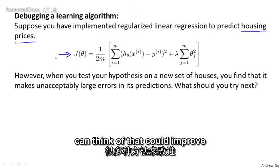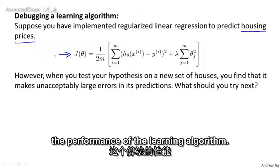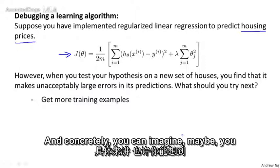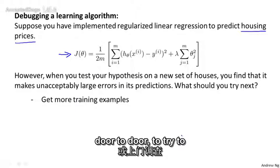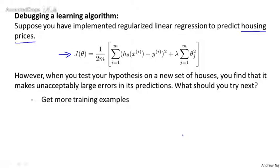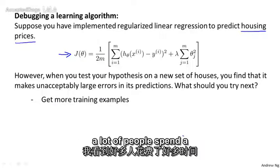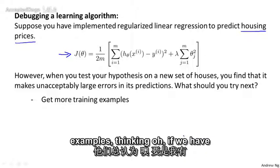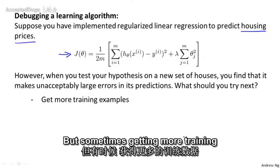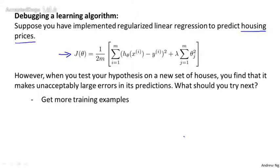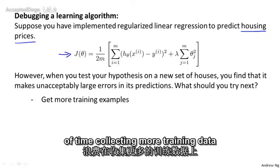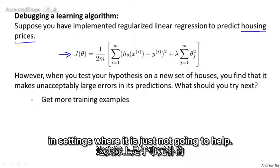There are many things that one can think of that could improve the performance of your learning algorithm. One thing that you could try is to get more training examples. And concretely, you can imagine maybe setting up phone surveys, going door to door, to try to get more data on how much different houses sold for. And the sad thing is, I've seen a lot of people spend a lot of time collecting more training examples, thinking, oh, if we have twice as much or ten times as much training data, that's certainly got to help, right? But sometimes getting more training data doesn't actually help. And in the next few videos, we'll see why, and we'll see how you can avoid spending a lot of time collecting more training data in settings where it's just not going to help.